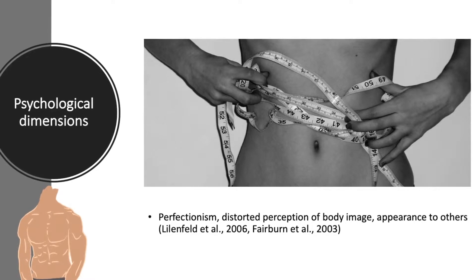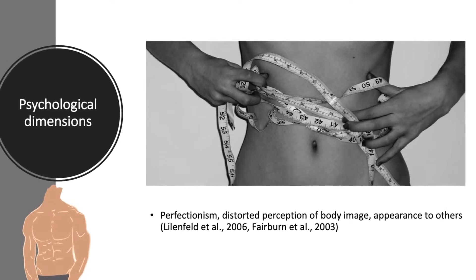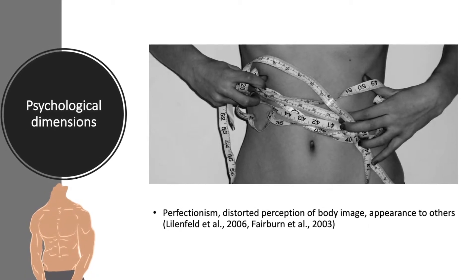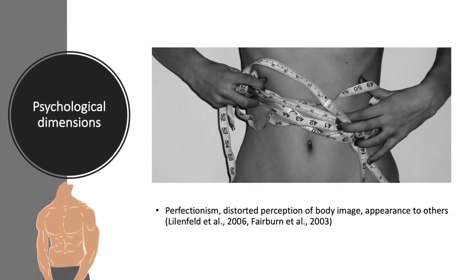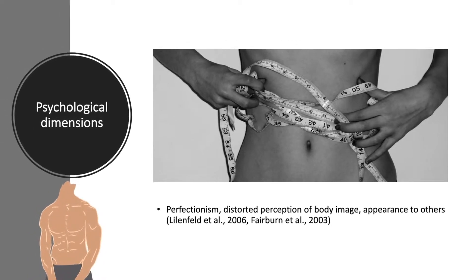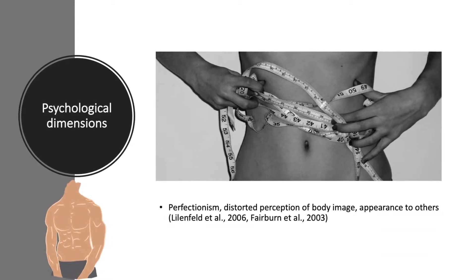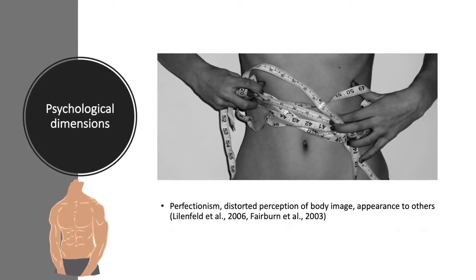There are also psychological dimensions, which include perfectionism and distorted perception of body image and appearance to others, according to Lillian Field et al. 2006 and Fairburn et al. 2003.